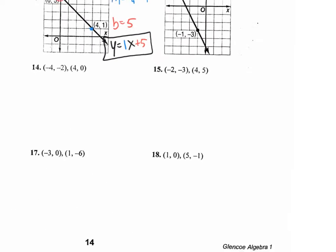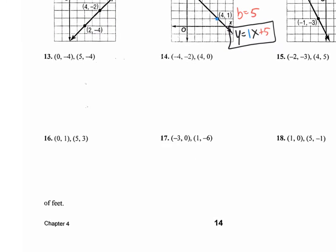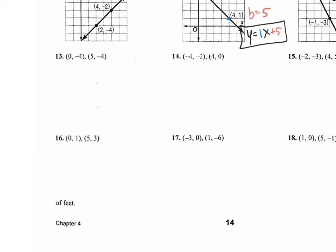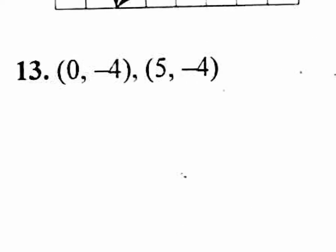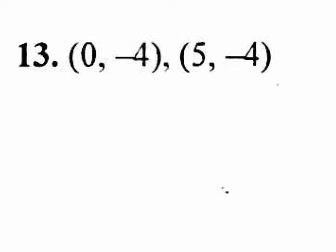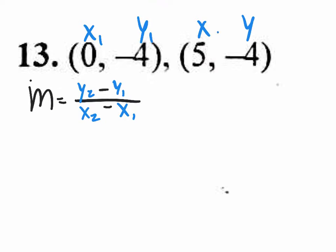Down here, they give you two points. Okay? And we need to find the slope first. So on number 13, I need to find the slope first by using the slope formula. And the slope formula is m equals y2 minus y1 over x2 minus x1. Label them x1 y1, x2 y2.